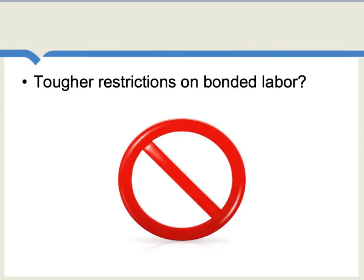Another possible solution is to have tougher restrictions and stronger laws against bonded labor. But from an economic perspective, this isn't always going to work. India has had numerous laws and restrictions on bonded labor dating from at least the 1970s, but still bonded labor continues there. Part of the problem is that if wages and productivity levels truly are low, simply passing laws against bonded labor is addressing a symptom rather than the cause. What we need is to raise the wages and productivity of labor, and simply passing a law does not automatically do that.